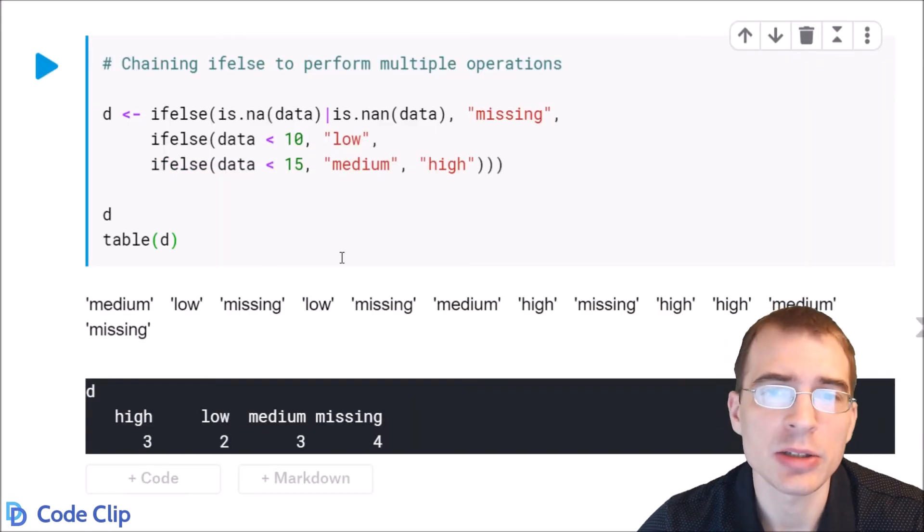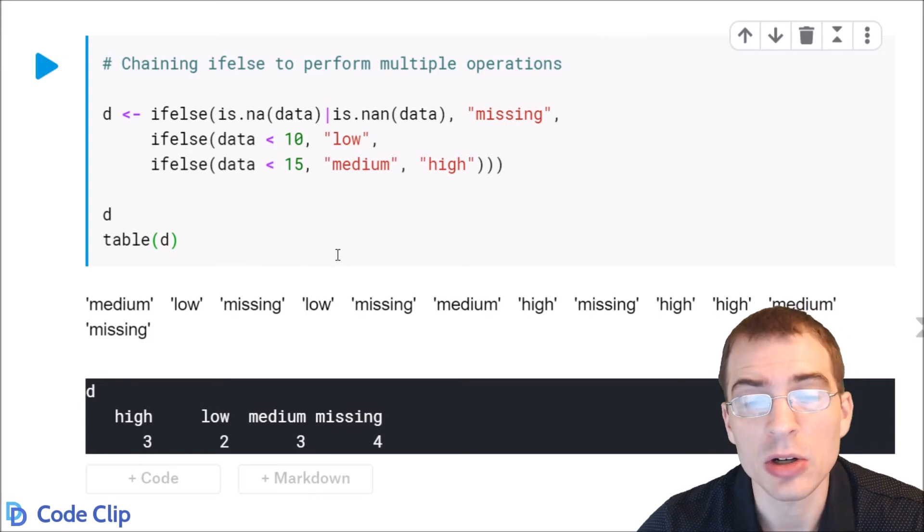So in this case, we basically used ifelse to quickly turn a numeric variable into a categorical variable that also identifies how many missing values there are.